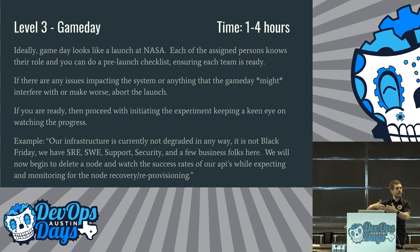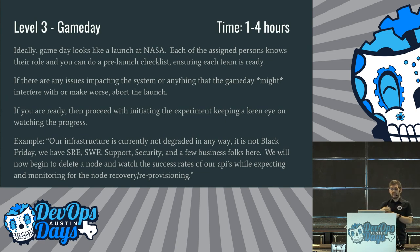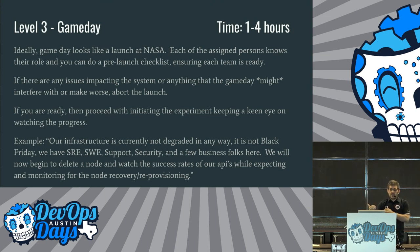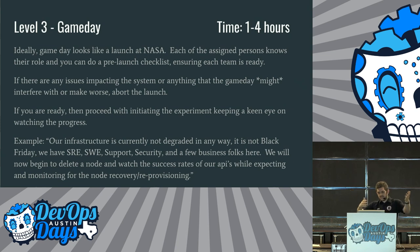Level three: have a game day. This could be one to four hours in length. Ideally, a game day looks like a NASA launch — each person shows up, they know their role, there's a script ready to go, a prelaunch checklist. If there are any issues impacting the system you know of before you start your chaos experiment, don't start it — don't compound things. Blast radius is what we're talking about. Then if you're ready, proceed with your experiment and keep a keen eye on progress. Example: our infrastructure is currently not degraded, it is not Black Friday, we have SRE, SWE, support, security, and business folks all in the room — we're now ready to begin deleting a node and watch the success rates of our APIs while expecting and monitoring for node recovery and reprovisioning.